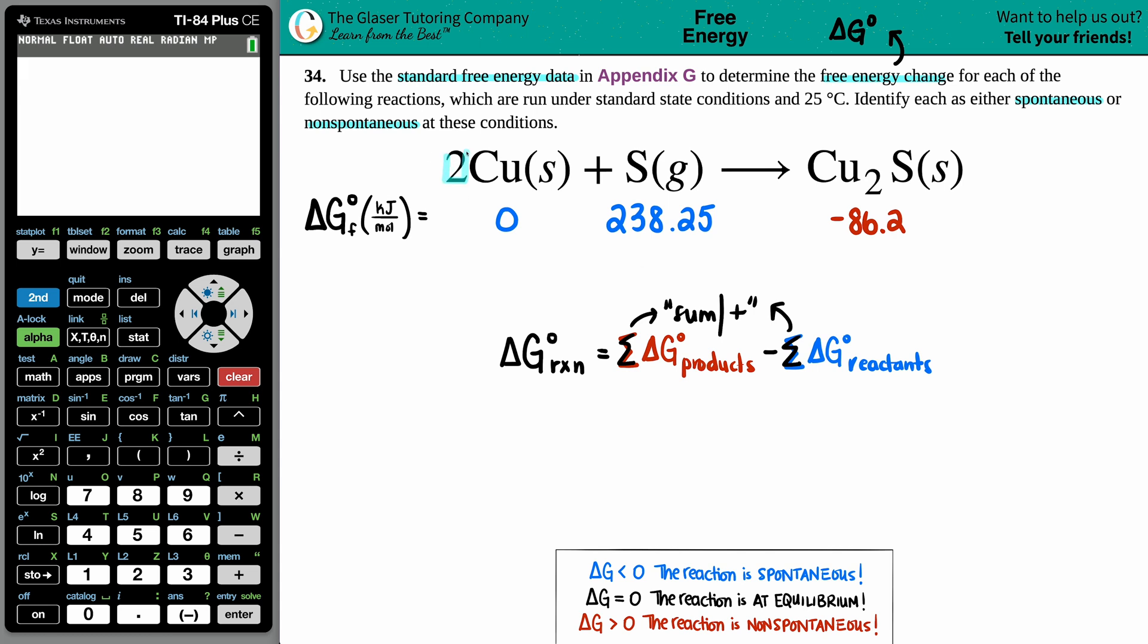Are these numbers going to be the same or different? It depends on what the coefficients are. There was two coppers, no number in front of the sulfur means one, and no number in front of Cu₂S means one. You're going to take those coefficients and times them by your delta G value. So for copper solid it would be two times zero, but anything times zero is just zero. This would be one times 238.25, and this would be one times negative 86.2.